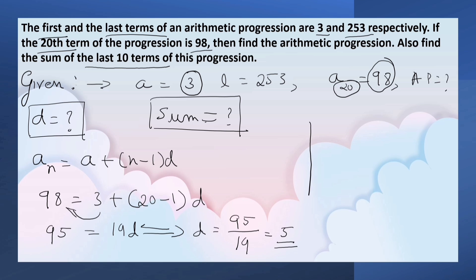Now let's write the AP. First term is 3, common difference is 5. So 3 plus 5 is 8, 8 plus 5 is 13, 13 plus 5 is 18, and so on.